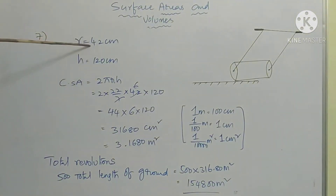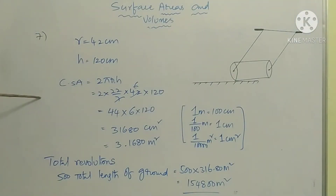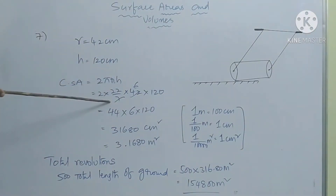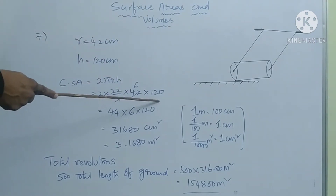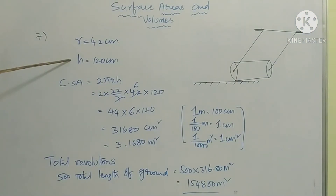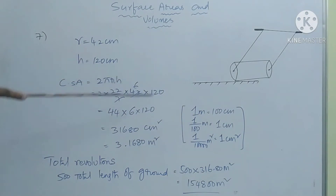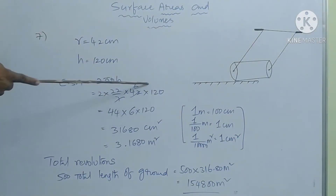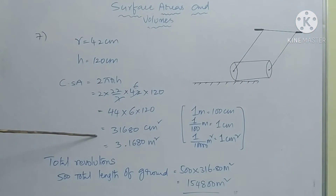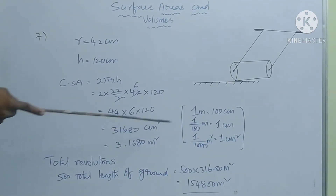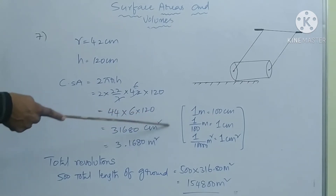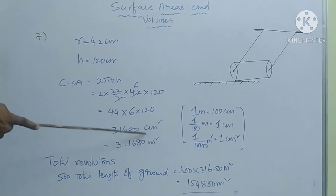Radius is 42 centimeters and height (length of the cylindrical roller) is 120 centimeters. Curved surface area of the cylinder is 2πrh, equals 2 into 22 by 7, into r = 42, into h = 120. Here 42 divided by 7 gives 6, so 22 into 2 is 44, into 6 into 120, which equals 31,680 centimeter square.